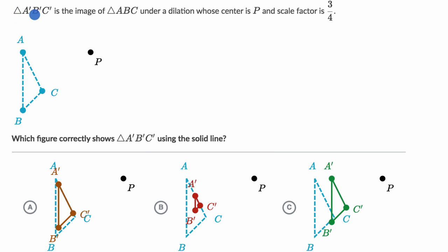We are told triangle A prime B prime C prime is the image of triangle ABC under a dilation whose center is P and scale factor is 3 fourths.